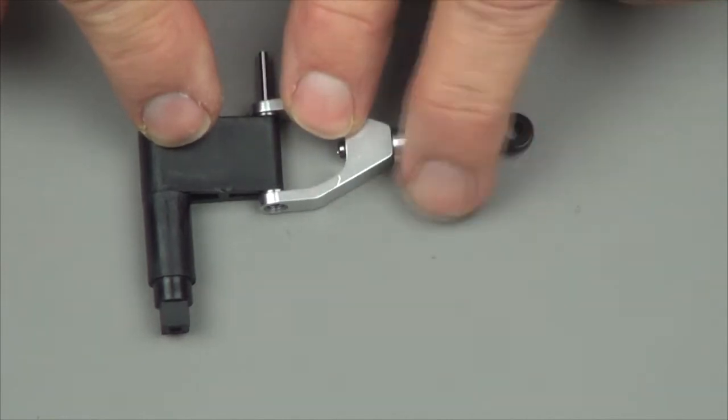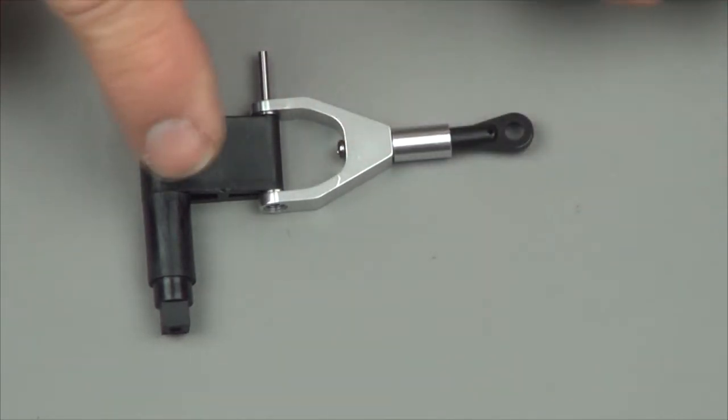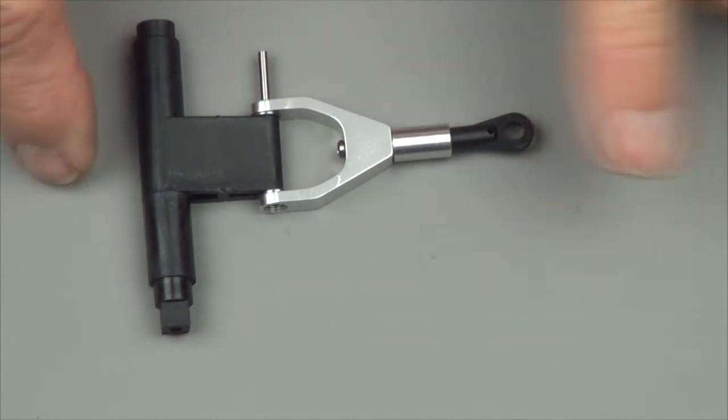They need to have the flanges on the inside. It doesn't really matter which direction this goes at this point because this link can still turn once you get it in the model.